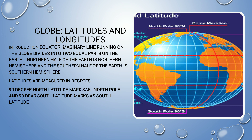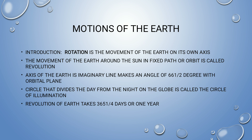Now moving on to the motions of the Earth. There are two important terms: rotation and revolution. Rotation is the movement of the Earth on its own axis. Revolution is the movement of the Earth around the Sun in a fixed orbit. The axis of the Earth is an imaginary line that makes an angle of 66.5 degrees with the orbital plane.